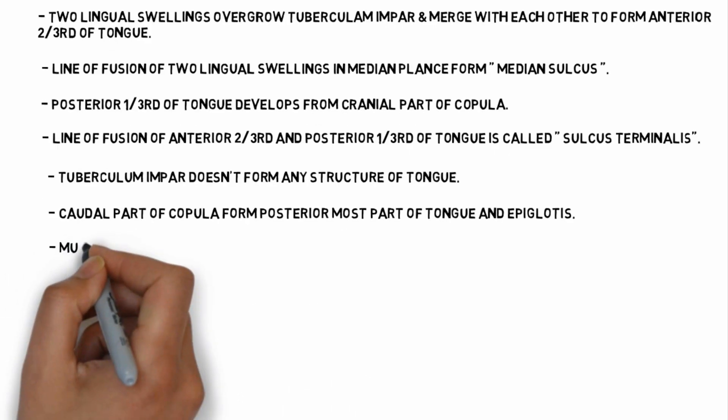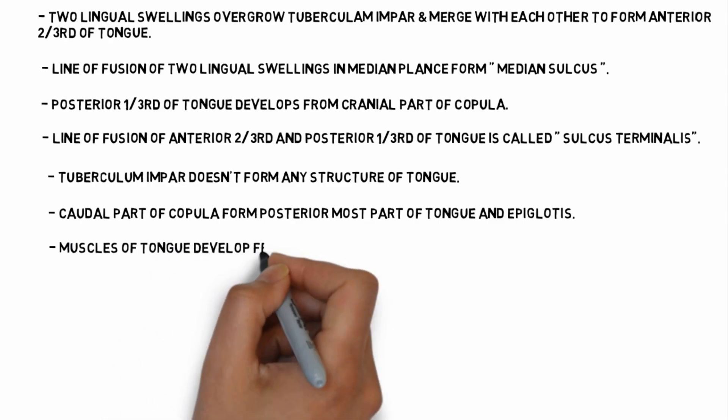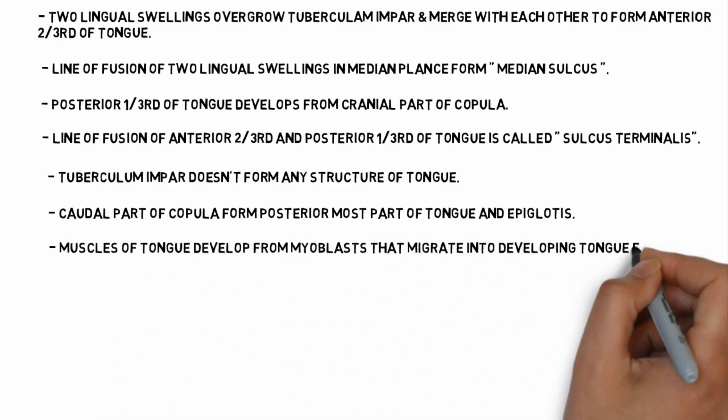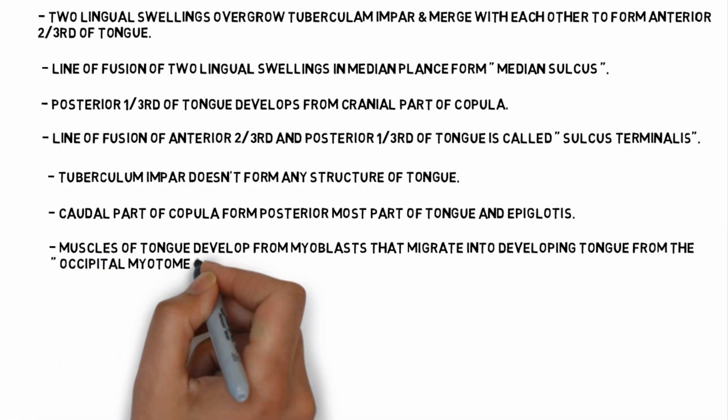The tuberculum impar doesn't form any structure of tongue. Caudal part of copula forms posterior most part of tongue and epiglottis.